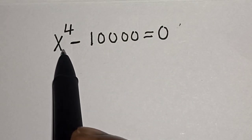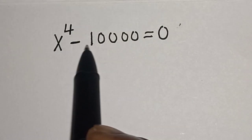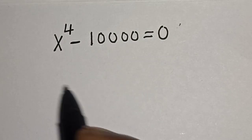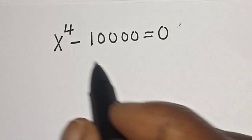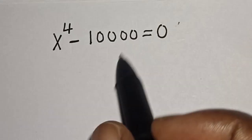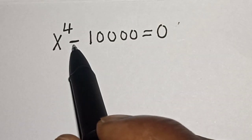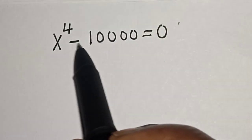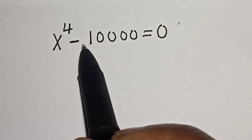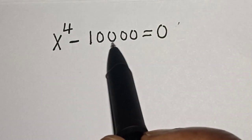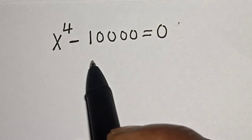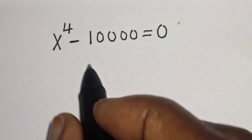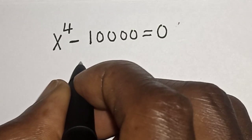If x raised to the power 4 minus 10,000 is equal to 0, then what is the value of s? Hi everyone, welcome to my class. In this class we want to find the value of s from this equation: s raised to power 4 minus 10,000 is equal to 0. But before we proceed, please don't forget to like, share, comment, and subscribe.